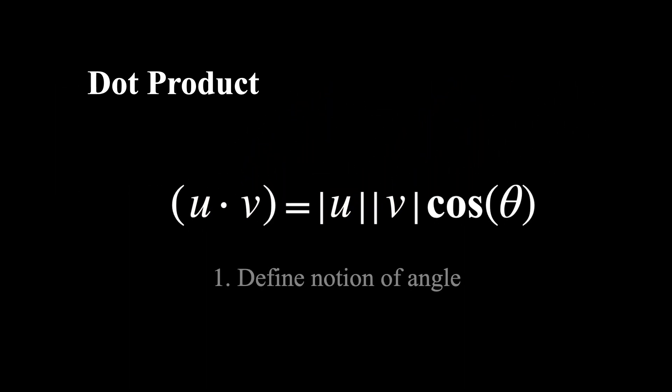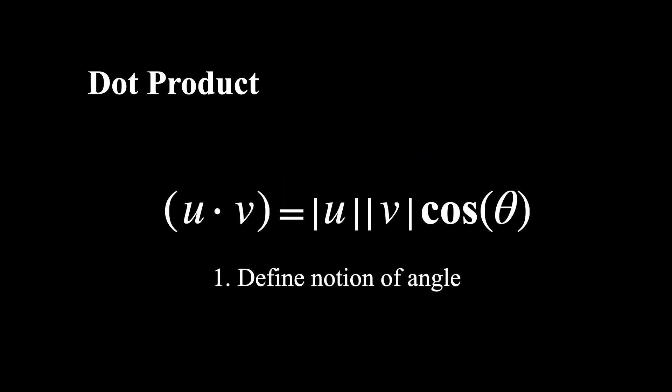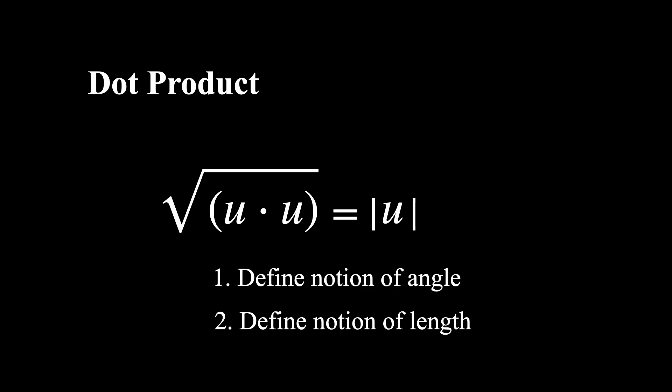So the relation between the dot product and this angle allows for a clear definition of what the angle between two vectors is in 3D space. Also, if you consider the dot product of a vector with itself, so the angle will now be 0, then u dot u equals the length of u squared.